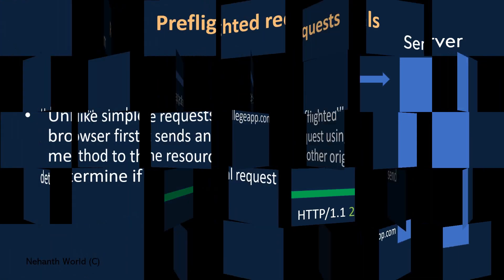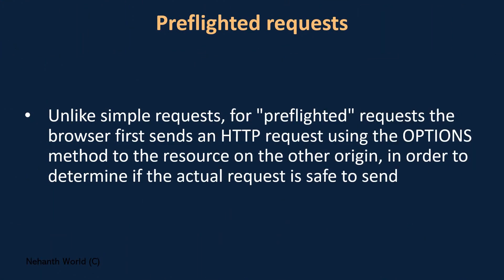Let's look at the preflight request. Unlike a simple request, for a preflighted request the browser first sends an HTTP request using the OPTIONS method to the resource on the other origin, in order to determine if the actual request is safe to send or not. So instead of sending the main request directly, it sends the preflighted request first to check whether the request is safe to accept.